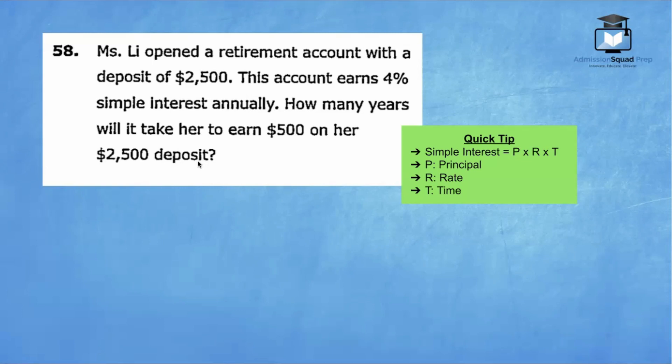The simple interest formula is written over here to the right. Simple interest means the principal or the initial amount times the rate of interest. We're going to turn that interest rate into a decimal times the time period, in this case, the number of years. So we have I equals P times R times T. Let's fill in the information that the problem gives us. Remember, it's always important to annotate the problem. So we have an initial amount of $2,500, the interest rate of 4%, and also the final simple interest amount of $500. What we're looking for here is time.